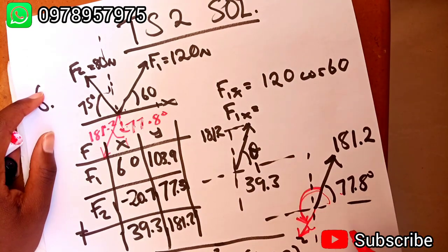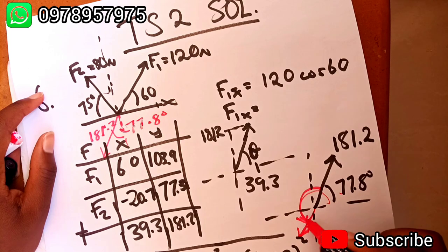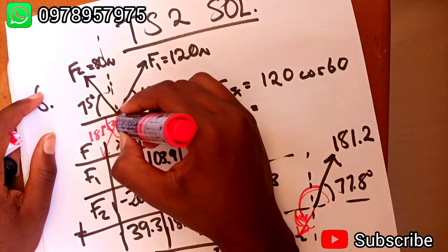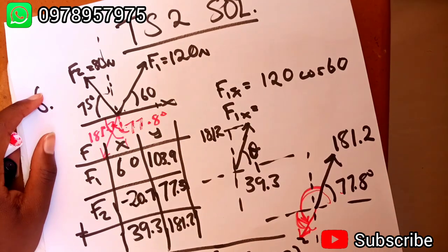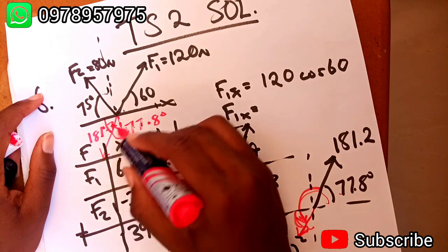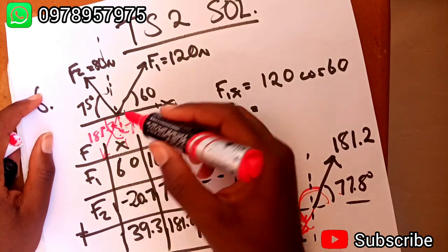It's all the same thing because if this is 77.8, this must be the same angle. In fact, this angle should be the one that should be 77.8, or you can subtract it and find the angle that will be acting down there.